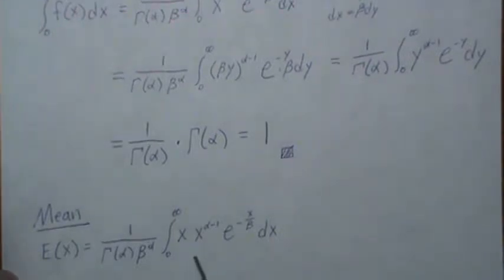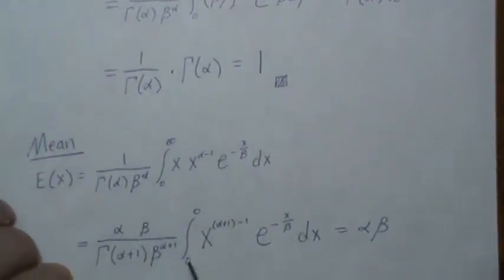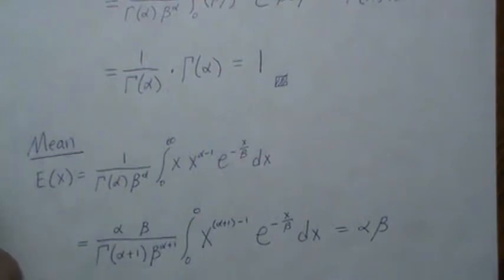Now one thing we try to do in statistics is to make an integral look like a PDF, because we know it integrates to 1. So here the new parameter, let's call it alpha plus 1, so that means we need beta to the alpha plus 1.